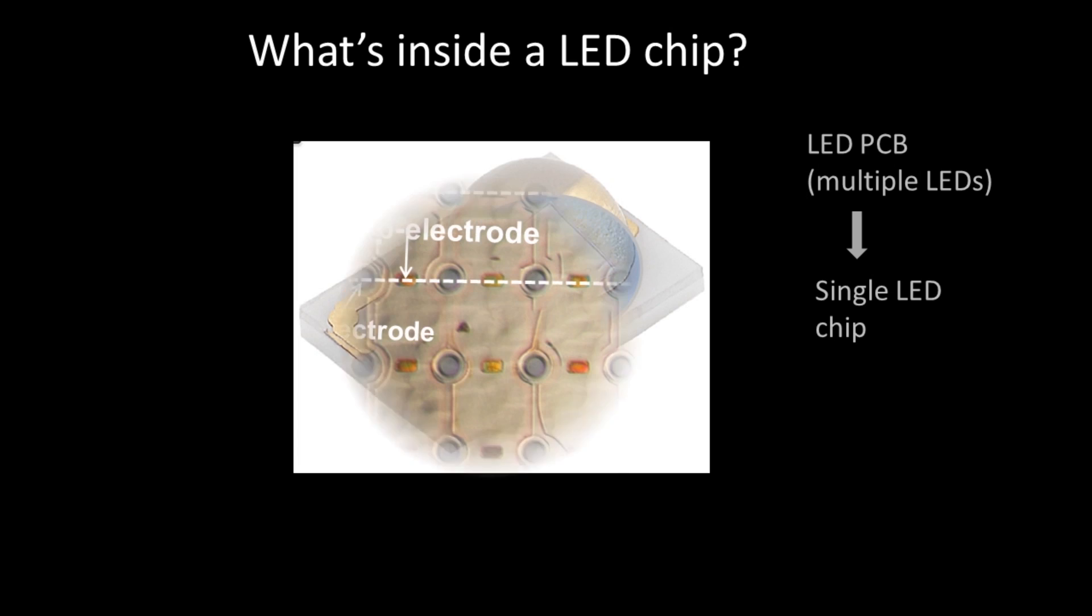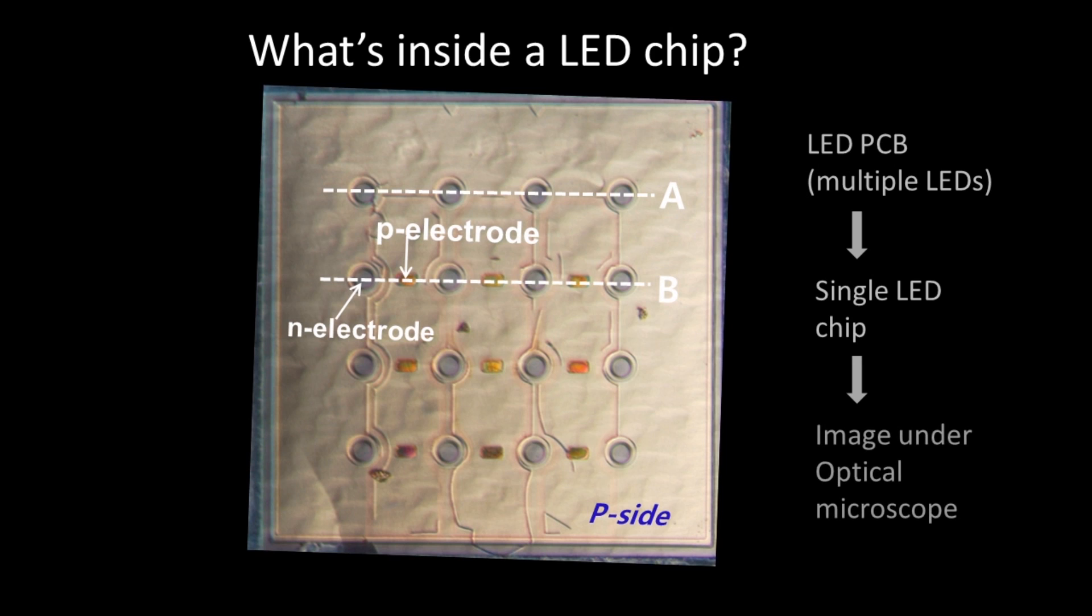We're now going to look under an optical microscope at that LED chip in a bit more detail. Now this is starting to look a little bit complicated and we've got two things labelled as the P electrode and the N electrode.